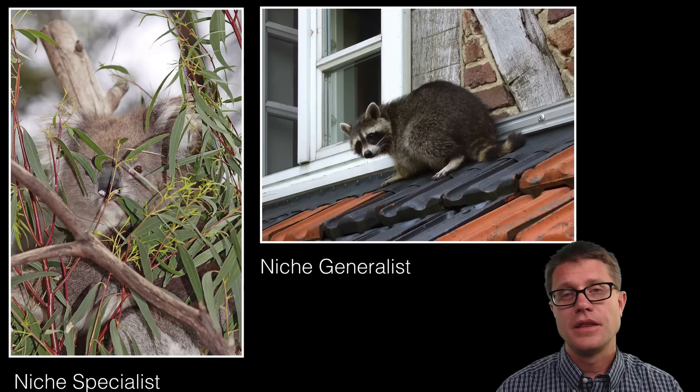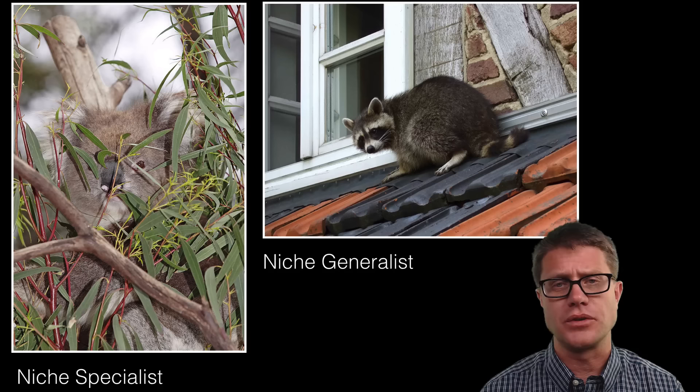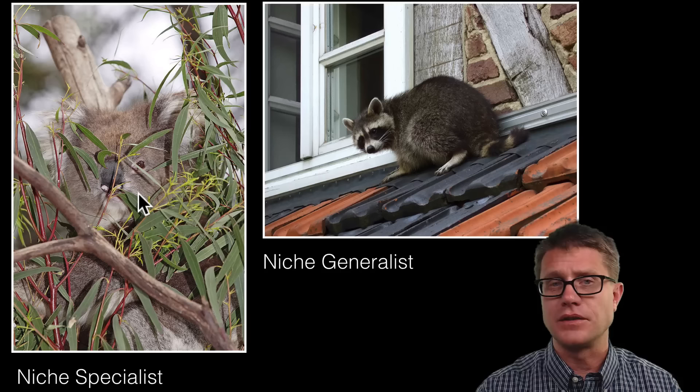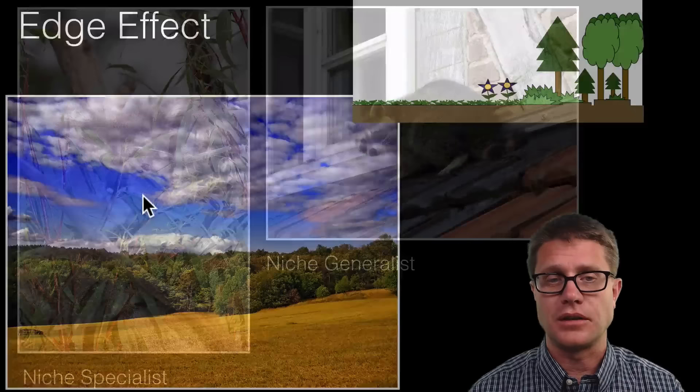That even applies at the individual level. A raccoon is what is called a niche generalist. It can eat lots of different food resources. It can live in lots of different areas. Whereas a koala can only eat eucalyptus leaves. Which of these do you think is more susceptible to change in that environment? Definitely going to be the koala. Since it is only feeding on one thing, if that resource is impacted it is going to be impacted as well.